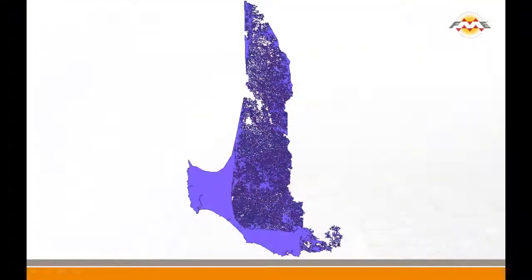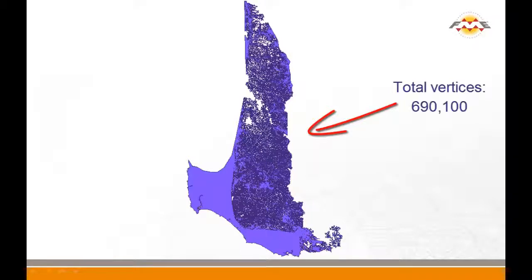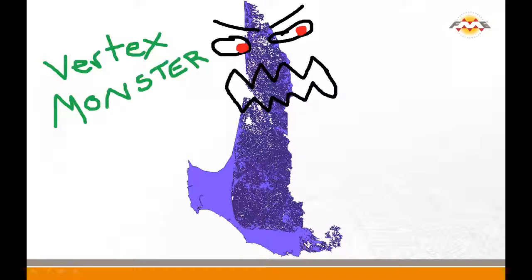This feature looks innocent enough, but it's not. The technical term for lines and polygons with this many coordinates is a vertex monster. Not only is it a performance burden, but some mapping systems have a limit on the number of vertices or coordinates allowed per feature. So what are you supposed to do if you come across a vertex monster?